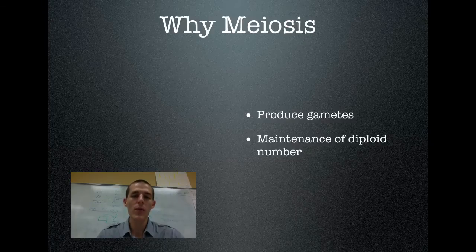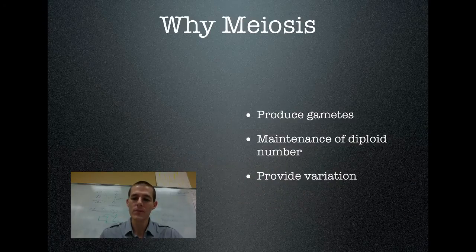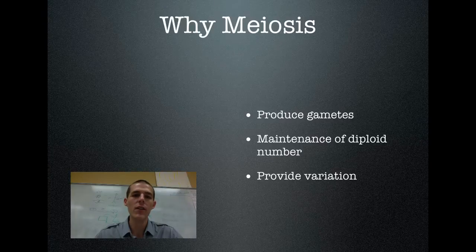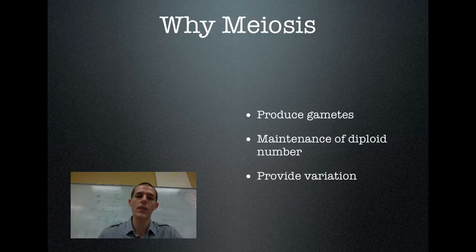The only way we can keep things consistent is by producing gametes that have half the amount of genetic material. The last reason is to provide variation. Mitosis, when it copies cells, produces exact copies — the daughters are just like the parents. In meiosis, that's not the case. Each of the daughter cells is different from the parent cell, and that is actually going to be the result of all the variation that we see in the world.